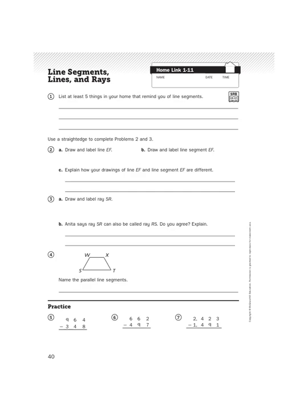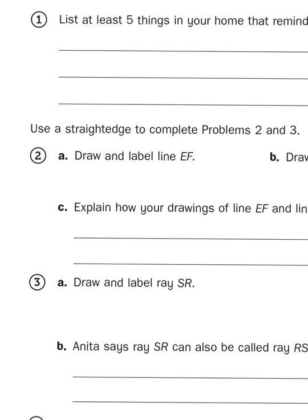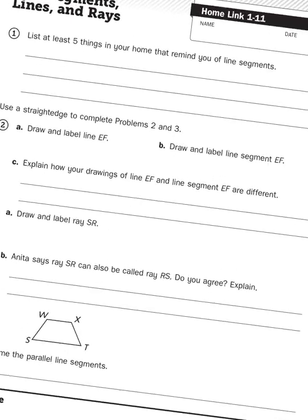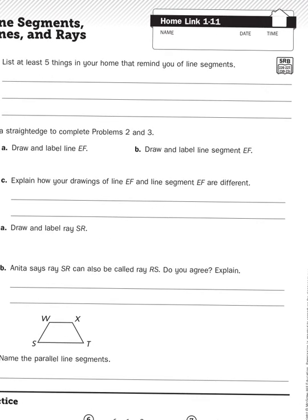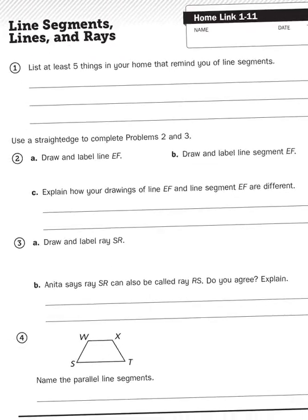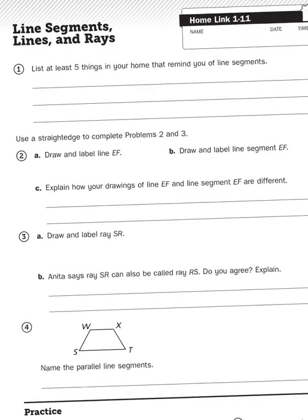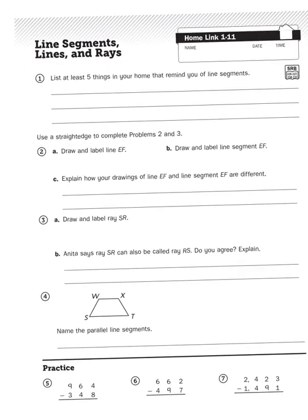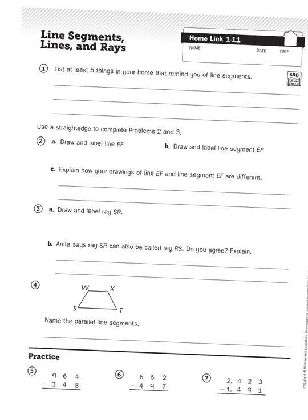Let's look at problem number two. Problem number two says, use a straight edge to complete. 2A says, draw and label line EF. And then 2B says, draw and label line segment EF. What is the difference between a line and a line segment? Well, the difference is arrowheads.